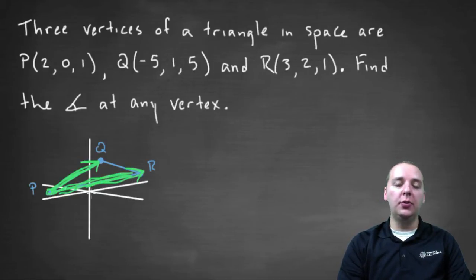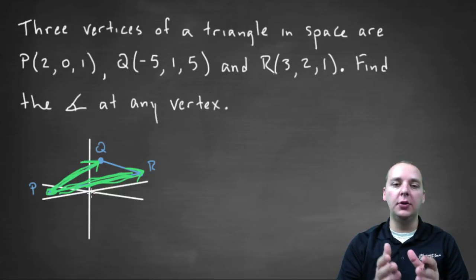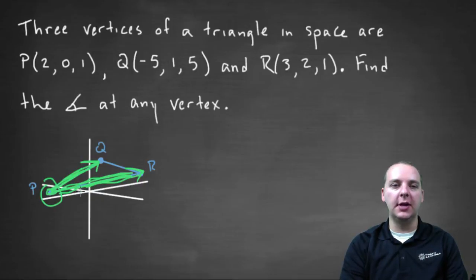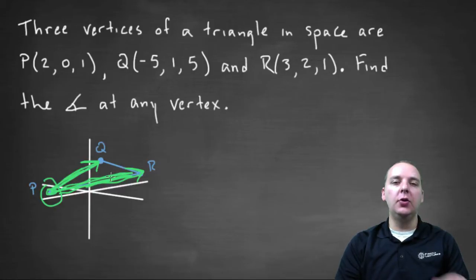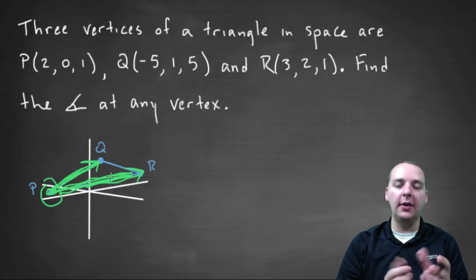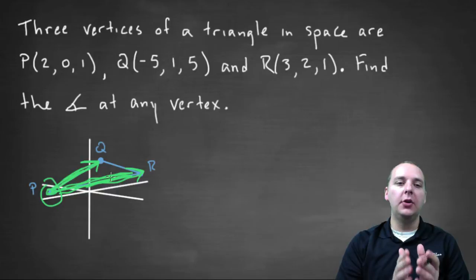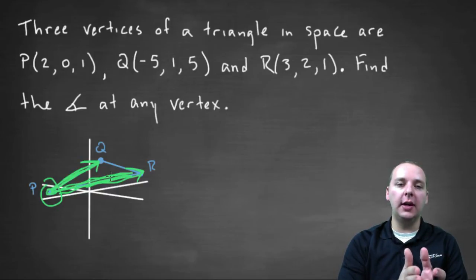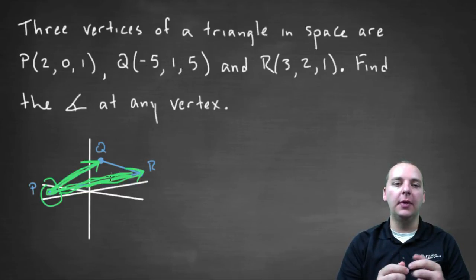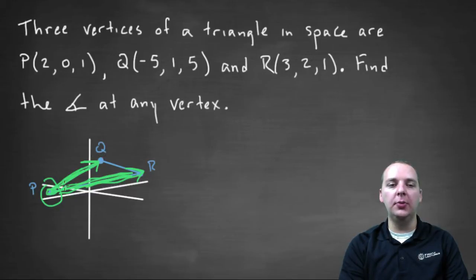You could choose another pair of vectors — you could do R to P and R to Q, or Q to R and Q to P, or whatever you want. I just had to choose one for this particular example. One caution before we get into the math: you have to make sure you have the same initial point, or else you're not finding the angle at a vertex. So don't do P to Q as one vector and Q to R as the other — that's not a consistent starting point.